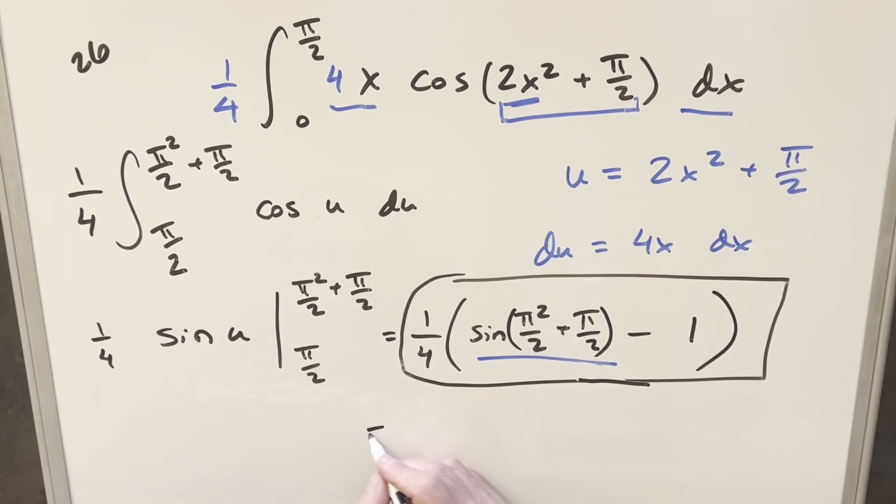So for another form of this solution, I can write this as 1/4 times cosine pi squared over 2 minus 1. And that's it.